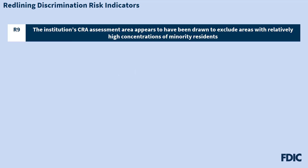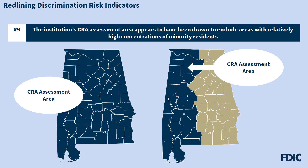The next risk indicator, R9, relates to situations where the institution's CRA assessment area appears to have been drawn to exclude areas with relatively high concentrations of minority residents. For example, if a bank's CRA assessment area excludes portions of a county that contains majority-minority tracts, the question would be why this exclusion occurred. This risk factor is similar to R6, except that R6 is not limited to the CRA assessment area.